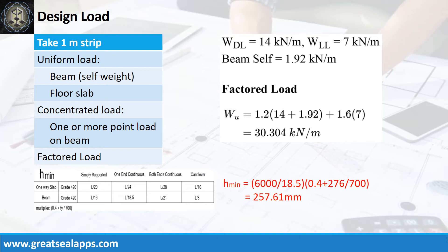The beam self-weight is 1.92 kN per meter, for a factored load of 30.304 kN per meter.